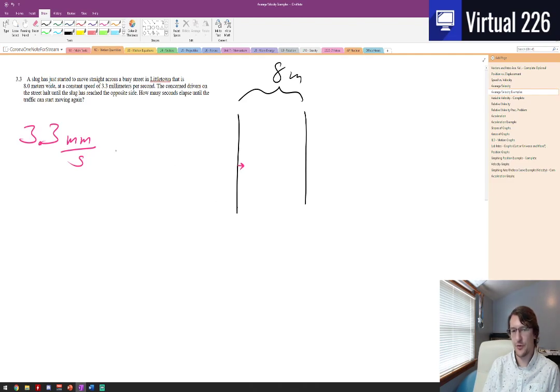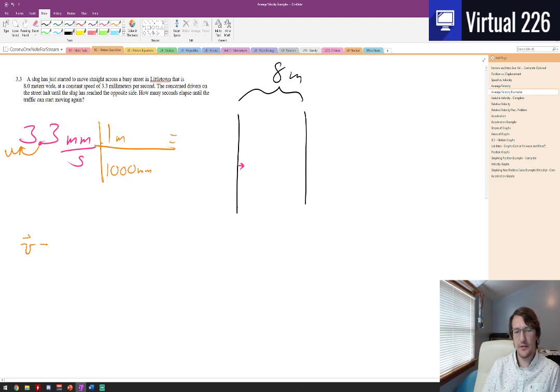Let's do this first, let's convert 3.3 millimeters per second into meters per second. To do that, let's just say in one meter how many millimeters are there, and there are 1,000 millimeters. With three zeros in our denominator, this is gonna go one, then two more, three. So our velocity that this slug is traveling is 0.0033 meters per second.